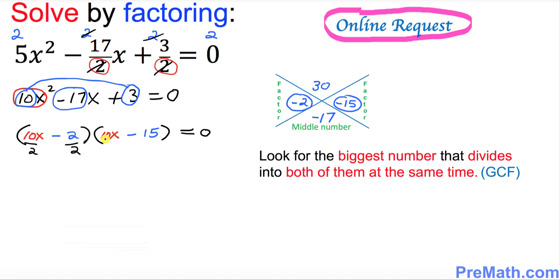Now look at the second parentheses with the numbers 10 and 15. The GCF is 5, so divide these by 5. Let's simplify: the first parentheses becomes 5x minus 1 and the second parentheses becomes 2x minus 3 equal to 0.